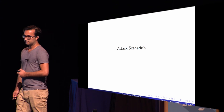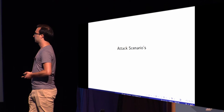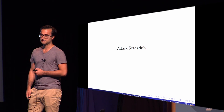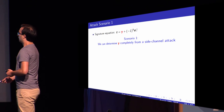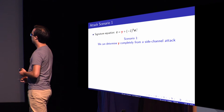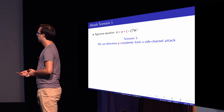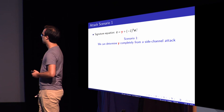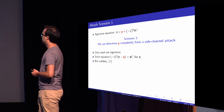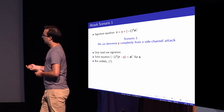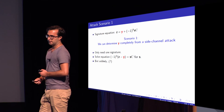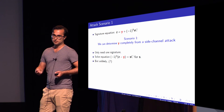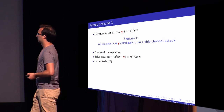I'll discuss three attack scenarios. The first is just an example of what you can do; the second and third are scenarios we actually implemented. We have the signature equation holding over the integers. In scenario one, suppose we can determine any Y completely from a side-channel attack — we know every noise coefficient. Then we only need one signature and can solve the equation with a linear solver. We don't know bit B, but since -S and S are both valid as a secret key, this is doable.